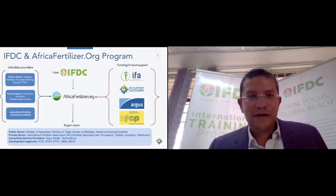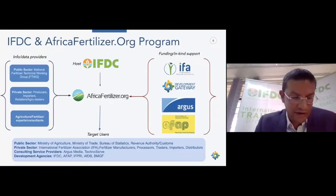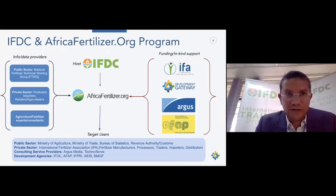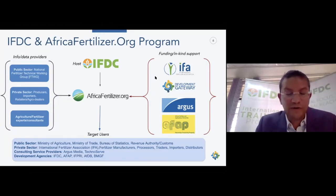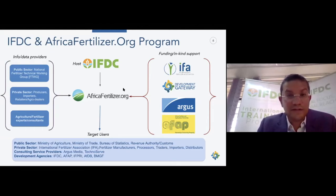IFDC has been implementing programs around fertilizer technology, agricultural productivity, and smallholder farmer access to inputs for over 45 years. Currently they implement around 30 programs in over 20 countries, mostly in Africa and some in Asia. In Kenya, where Alexander is based, IFDC has had a physical presence since 2009, implementing value chain programs, fertilizer research, and fertilizer market information programs such as AfricaFertilizer.org.